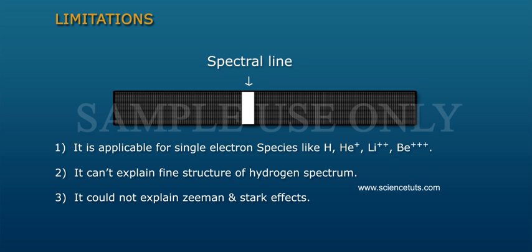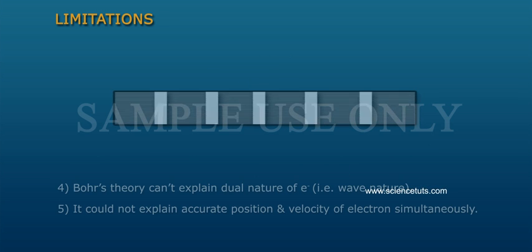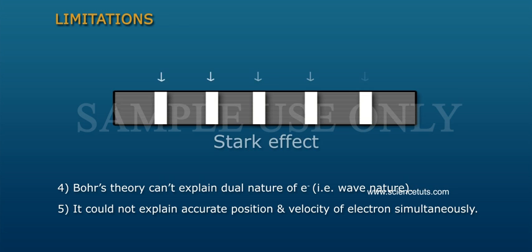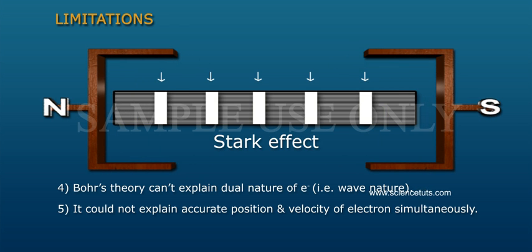It cannot explain fine structure of hydrogen spectrum. It could not explain Zeeman and Stark effects. Bohr's theory can't explain dual nature of electron, i.e. wave nature. It could not explain accurate position and velocity of electron simultaneously.